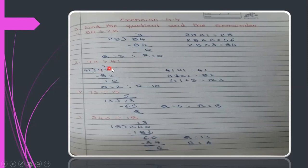Next, 92 divided by 41. The smaller number goes outside and the bigger number inside. Write the 41 table: 41×1=41, 41×2=82, 41×3=123. Since we have 92, we can take 2 times — 41×2=82. So quotient is 2 and remainder is 10.